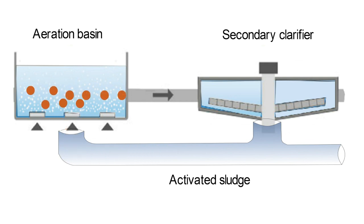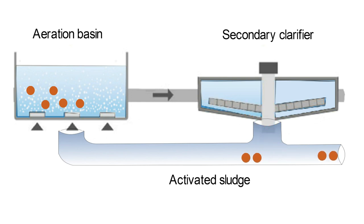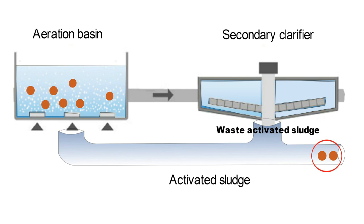However, as more and more sludge enters the plant over time and a certain sludge age has to be maintained, some sludge has to be removed from the process. Removed sludge is also known as waste-activated sludge, or WAS. WAS might contain toxic components so that it cannot be released into the environment.